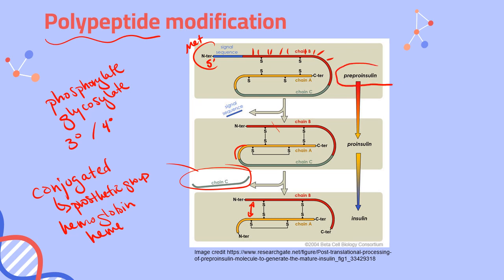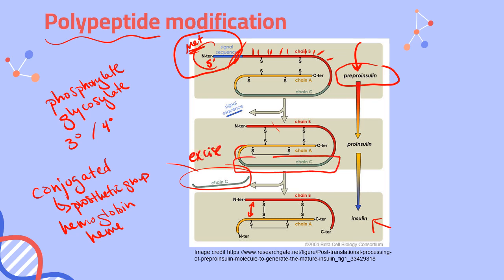This particular example is insulin. Insulin is not a conjugated protein, so we don't need to add prosthetic groups, but there is a lot of other modification involved in getting from a pre-pro-insulin polypeptide chain to functional insulin protein. We chop off not just the methionine but an entire chunk known as the signal sequence or signal peptide. We also excise chain C from the polypeptide chain, taking us from pre-pro-insulin to pro-insulin to actual insulin. We bind the two remaining chains — chain B and chain A — together with disulfide bridges, and finally we have mature, functional insulin.